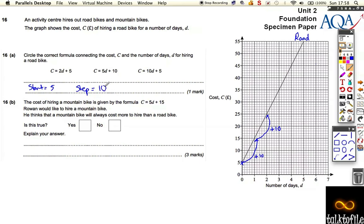Very much like the sequences, the jump or the step goes next to the letter, and the start is the bit you add or subtract on the end. So the formula here is 10d plus 5 - step of 10 plus the starting position of 5. That will get you a mark for picking that right one.